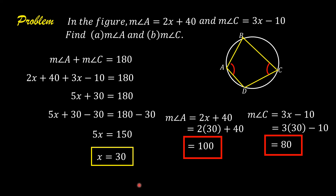To check: the measure of angle A is 100 and the measure of angle C is 80. Therefore, the sum of the measures of angle A and angle C is 180, and since their sum is 180, they are supplementary.